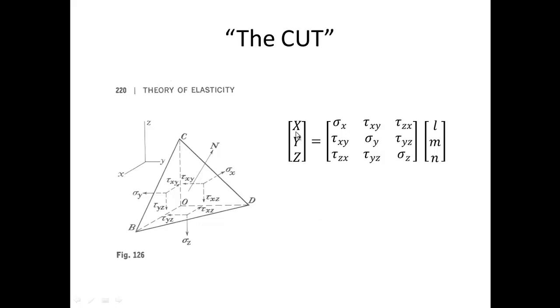Thus, the components X, Y, and Z of stress on any plane defined by the direction cosines l, m, and n can be calculated by this equation, provided that the stress state given by sigma x, sigma y, sigma z, tau xy, tau yz, and tau zx is known for a point in terms of the specified coordinate system.